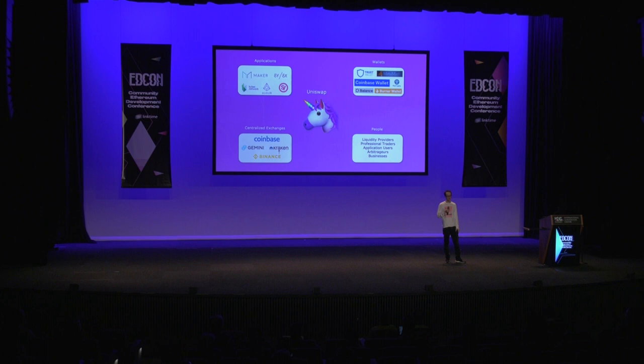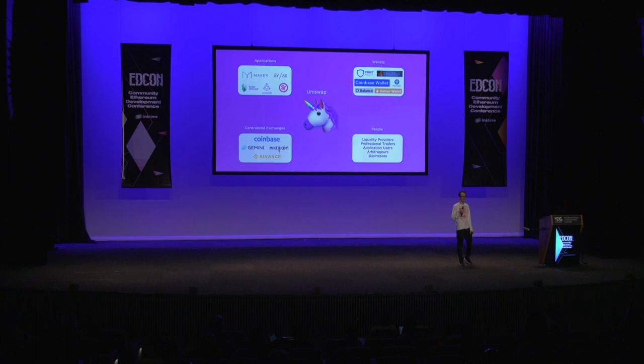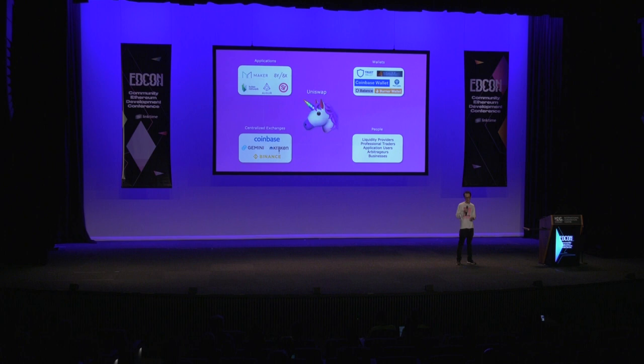Who are the users of Uniswap? To me, it's everyone. It's dApps and apps — having the ability for an application to take a fee or be paid in any token and on the fly convert it to whatever token it wants is very powerful. Centralized exchanges could use it as a source of liquidity. Wallets can use it as a source of liquidity. Traders, arbitragers, random people. Hopefully it can enable more people to be a part of the global financial system, because it's built on top of Ethereum with no walled gardens. I'm pretty excited.